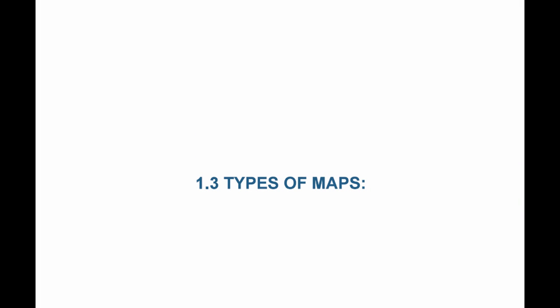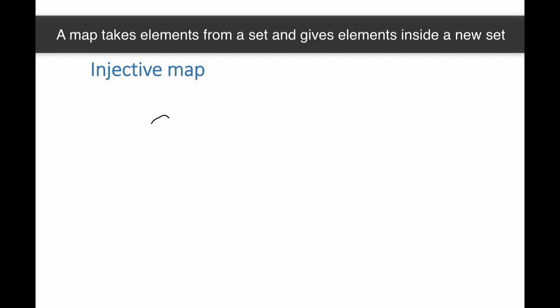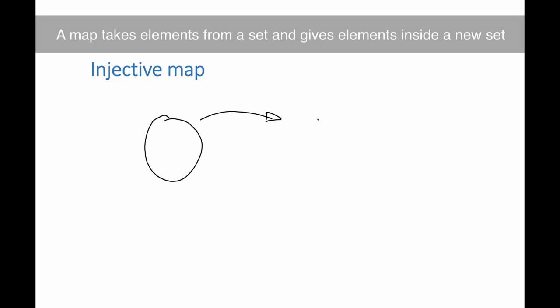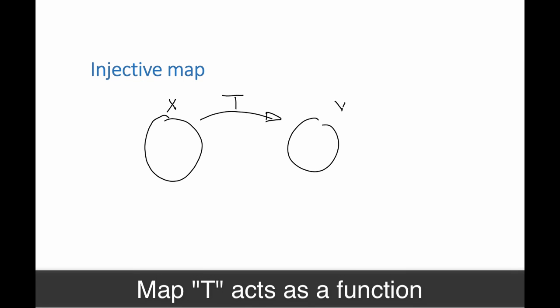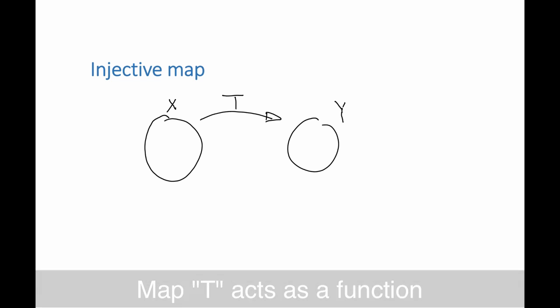In this presentation, we're going to talk about the types of functions or types of maps. A map takes elements from a set and gives me elements inside a new set. So if this set is called x and this set is called y, then the map t takes elements from x and gives me elements in y.